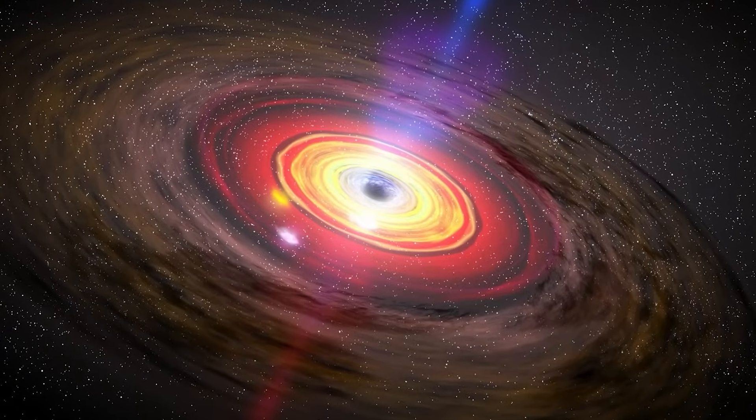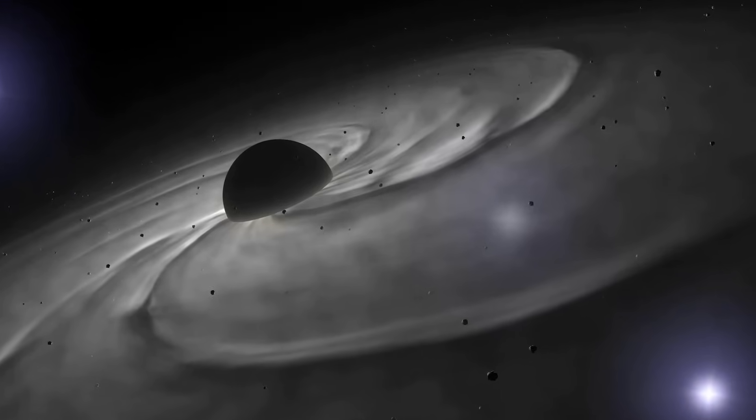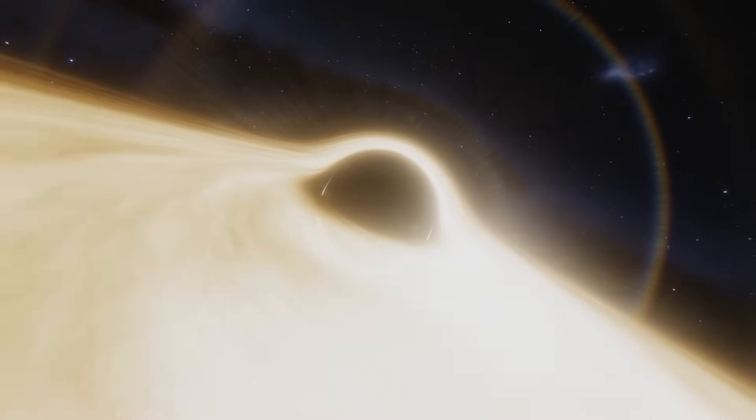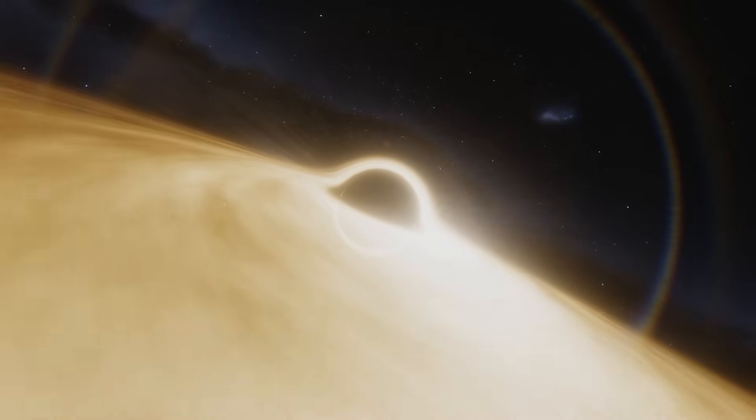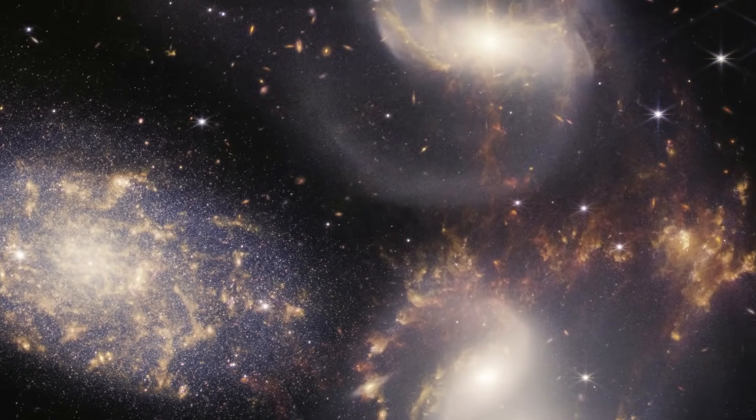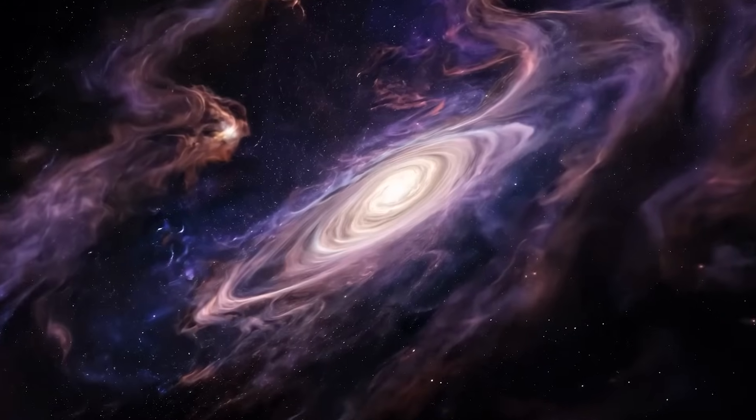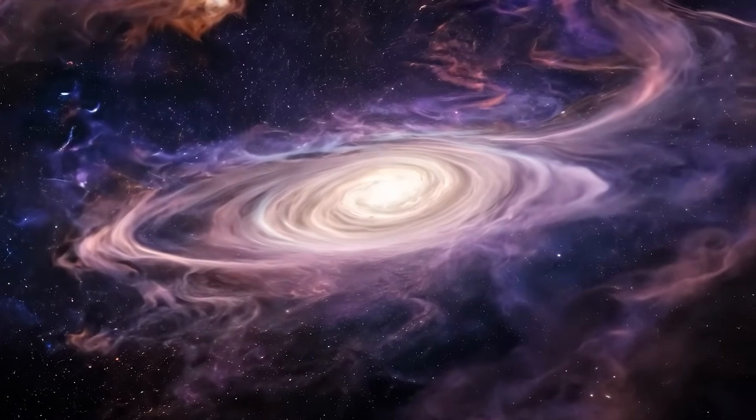The powerful quasar also drove the star formation rate up dramatically, while dark matter halos in the background created ever more momentum, power, and change through a process known as positive feedback. James Webb shows us that protogalaxies often appeared in groups in the early universe, most likely brought together by the immense power of the underlying dark matter halo.